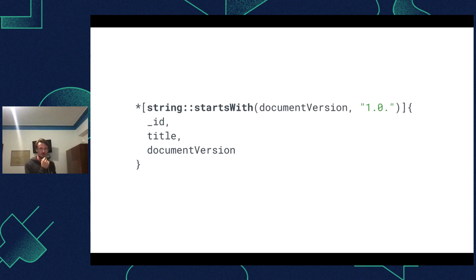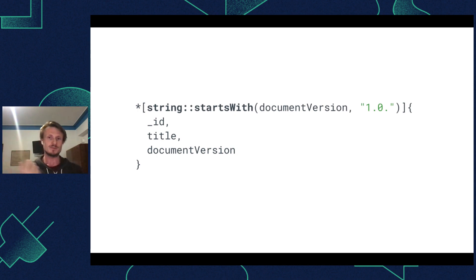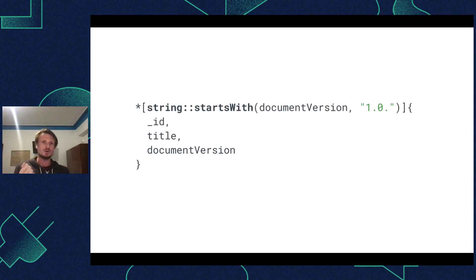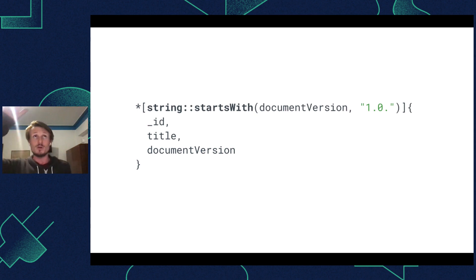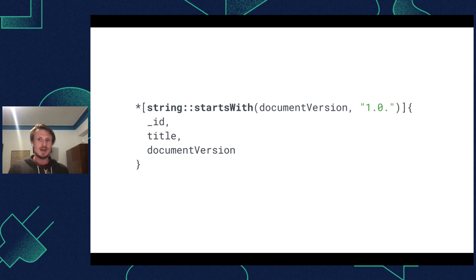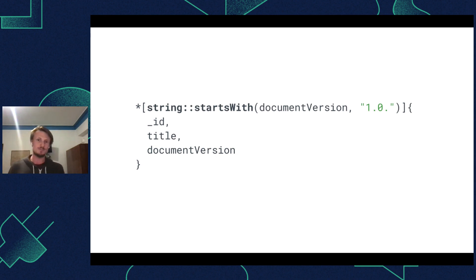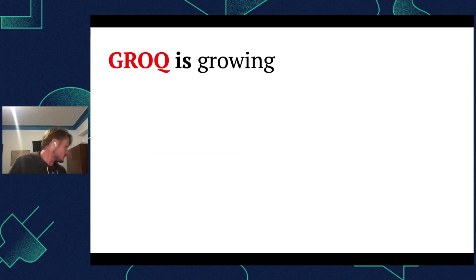string::startsWith is a function which takes in two strings and returns true if the first string starts with the second. It's very useful for filtering, especially for internationalization use cases where you might have the language as part of the document ID. One customer used this to find all documents for a single version of content — for instance finding all documents at version 1.0 to update them to 1.1. It doesn't come up that often, but when it does, it solves a really neat problem. There are also a bunch of math functions I won't go through here.